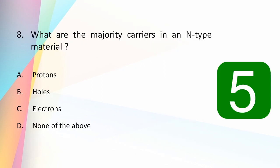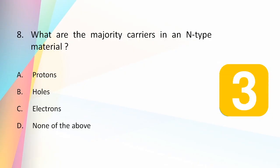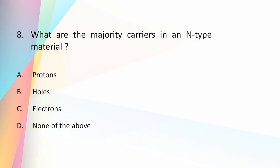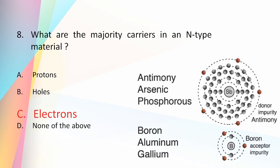The majority carriers in an N-type material are electrons. In N-type semiconductors, conduction is primarily due to electrons, and hence electrons are the majority carriers.